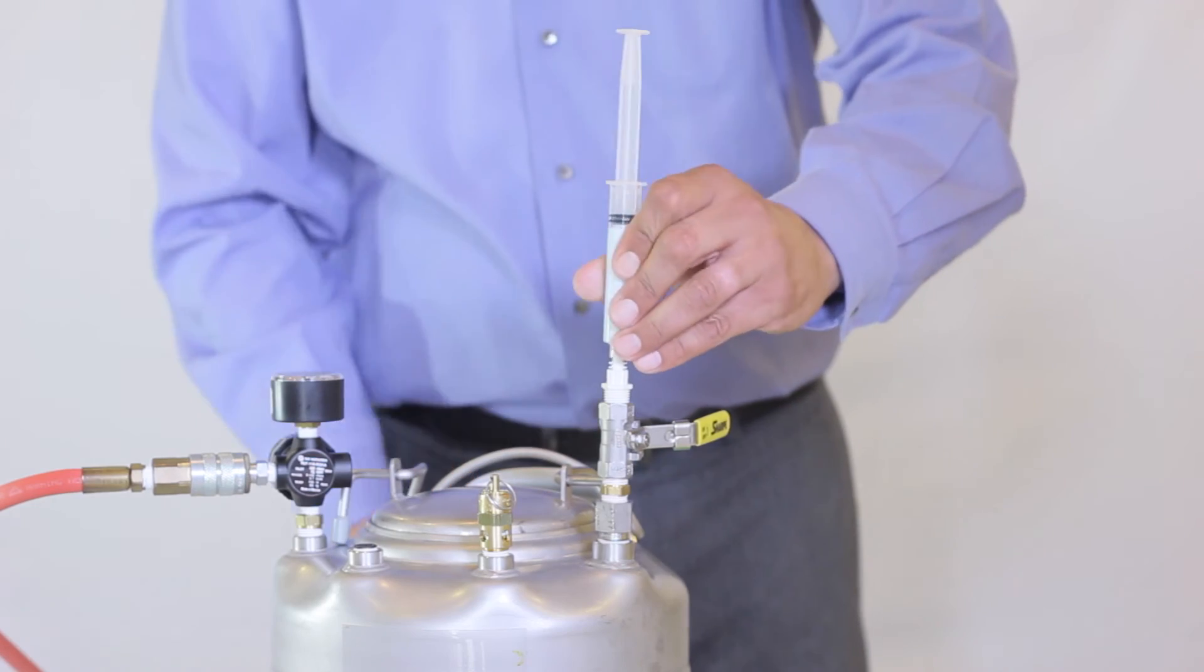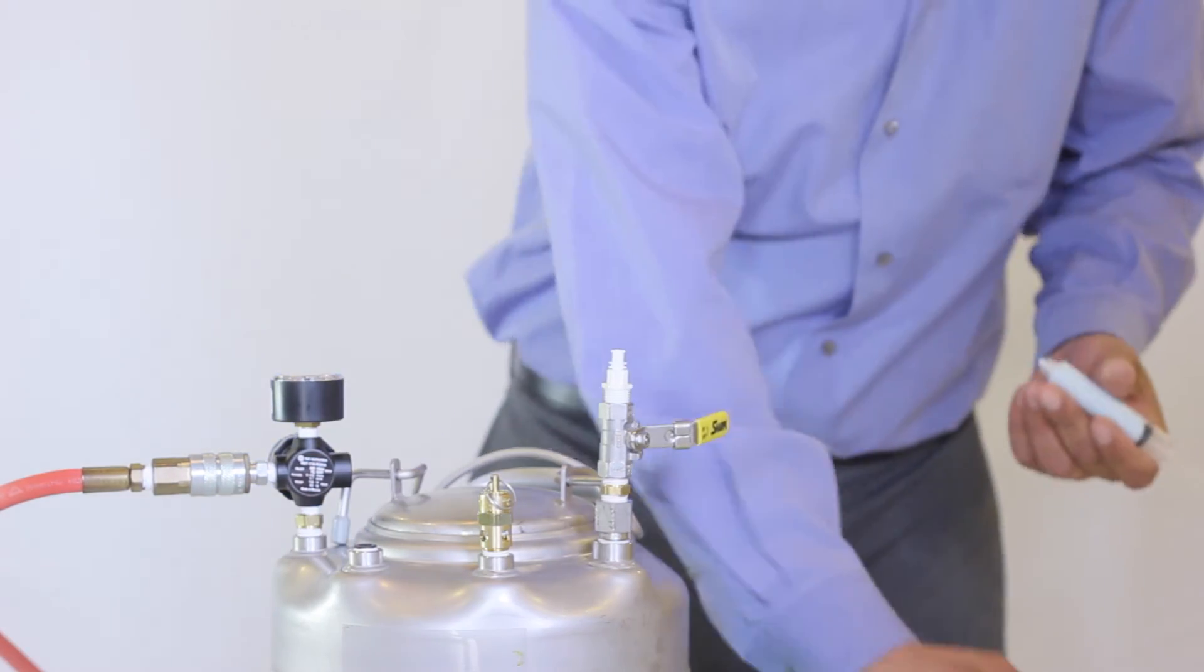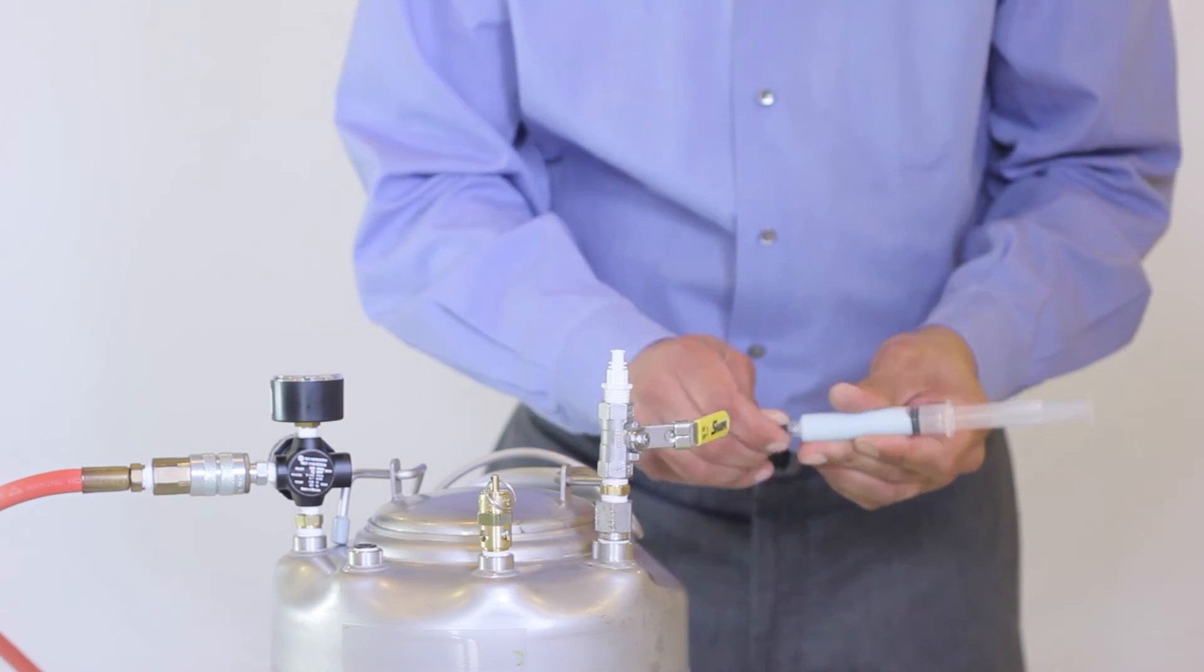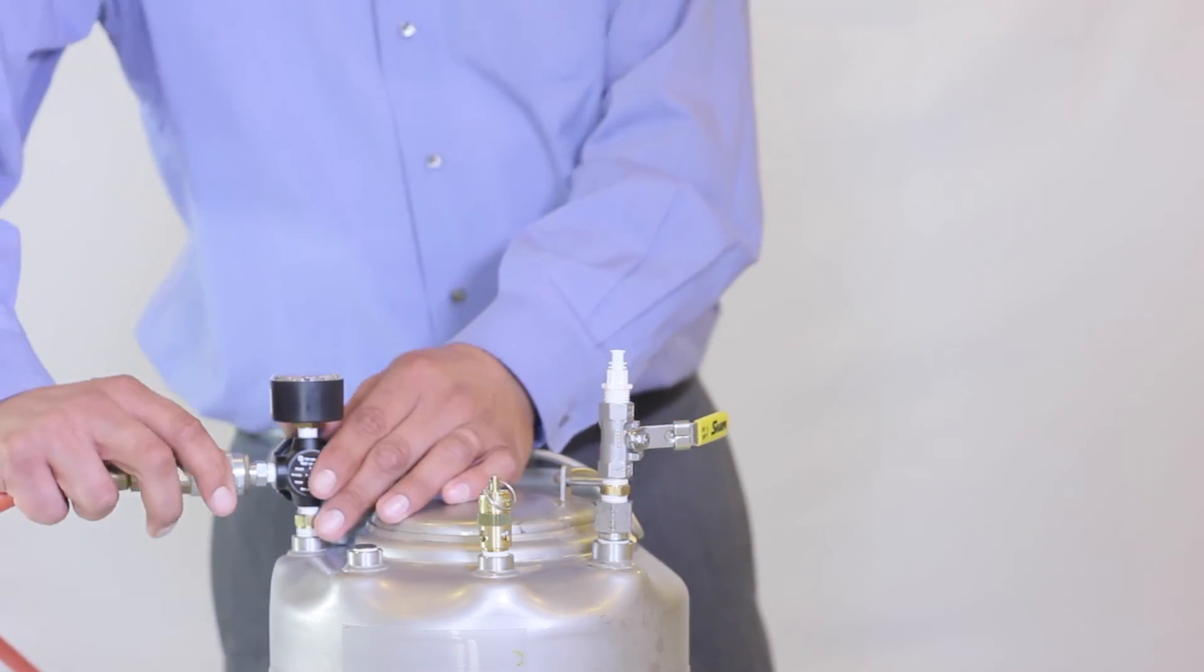Now when you've achieved the proper fill and the ball valve is in the off position, remove your syringe and adhere a tip cap to the syringe to prevent curing and oozing. To maintain the life of the material...